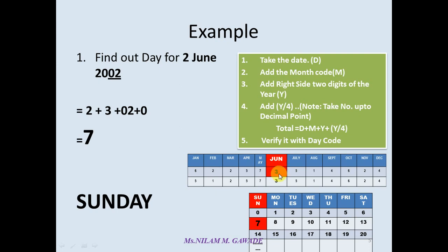Next step is add right side two digits of the year. This is year and this is right side two digits, we have to add this two digits. Next, add Y by four. Here Y is 02, and divide by four, we will get answer as zero. And finally, add this all. We will get 2 plus 3 plus 2 plus 0 is equal to 7. This is a number we have to verify from our day code. So let us see the day code chart and see where is 7. Seven is here and seven belongs to Sunday. So this day is Sunday. In this way you can find out day.